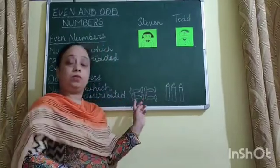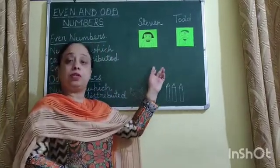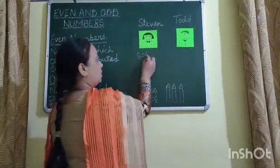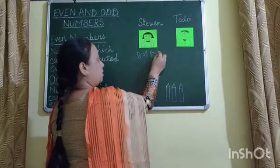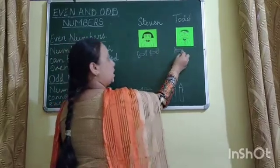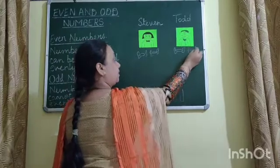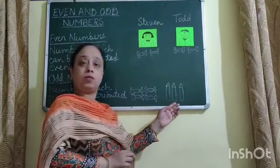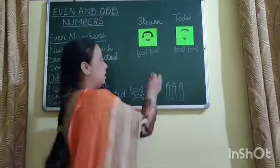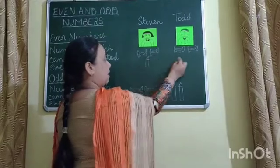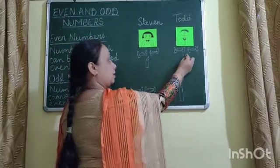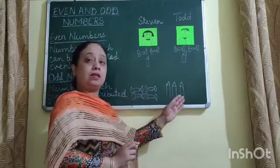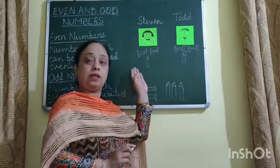If we have to distribute four toffees among two children, we could distribute them equally. Two toffees can be given to one child and the other two to the other child, and none is left. But if we want to distribute three pencils among two students, we could give one pencil to each, and still one is remaining.